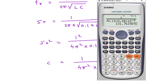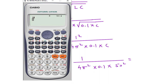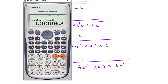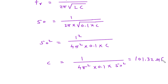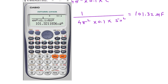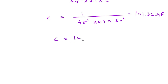Solving this: C = 1 / (4π² × 0.1 × 50²). This gives C = 101.32 microfarad, since it is 10 to the power of minus 6. Therefore the capacitance value is 101.32 microfarad.